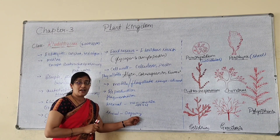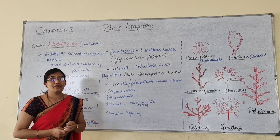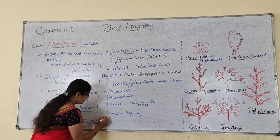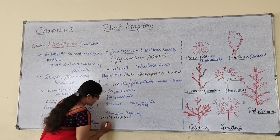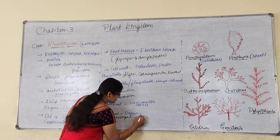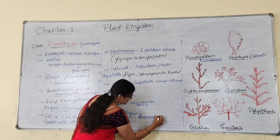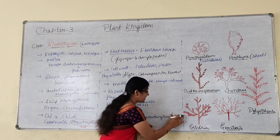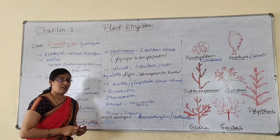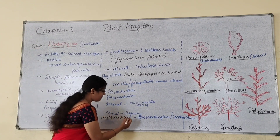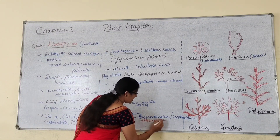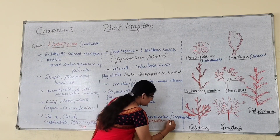Sexual reproduction takes place by oogamy — that is, a large non-motile egg and a small motile or non-motile male gamete. The male sex organ is called spermatangium, also called antheridium. This male sex organ produces non-flagellate, non-motile male gametes called spermatia.